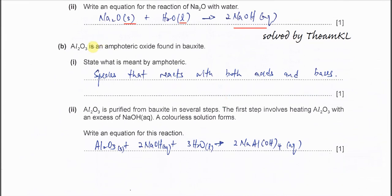Part B: Aluminum oxide is an amphoteric oxide. State what is meant by amphoteric. This one is very easy. The species that reacts with both acids and base, means the species that has acidic and basic properties.